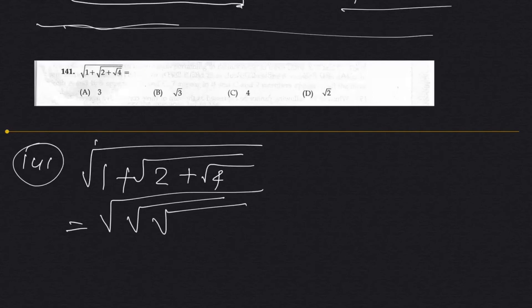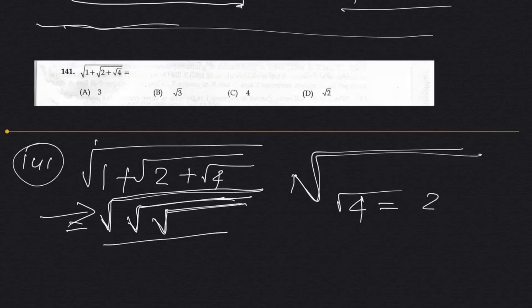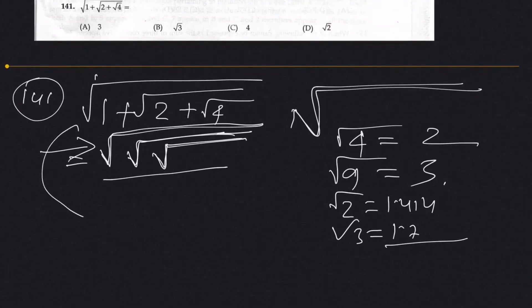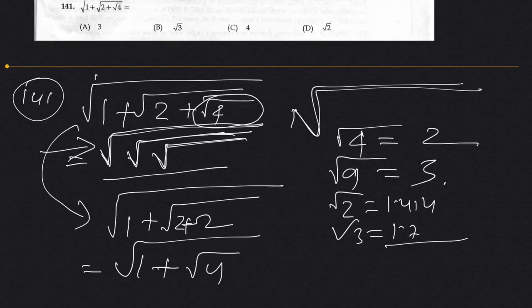If you put square root 2, it will be 1.414. If you put root 3 here it will be 1.7 whatever. So square root of 1 plus 2 or the square root of 4 is 2. So this is 1 plus root 4 over root. This is 1 plus 2 which is root 3. So the answer for this will be B which is root 3.